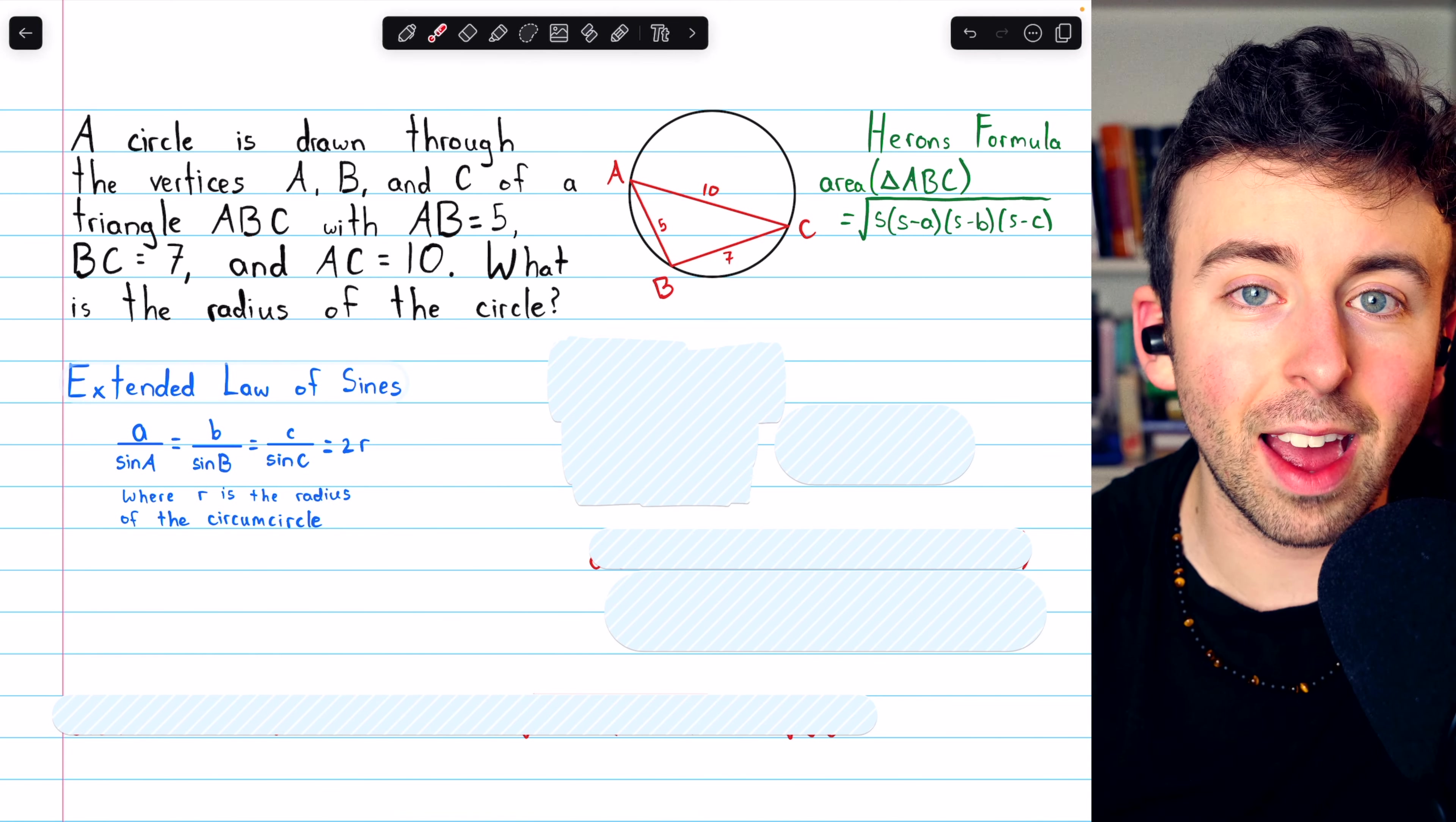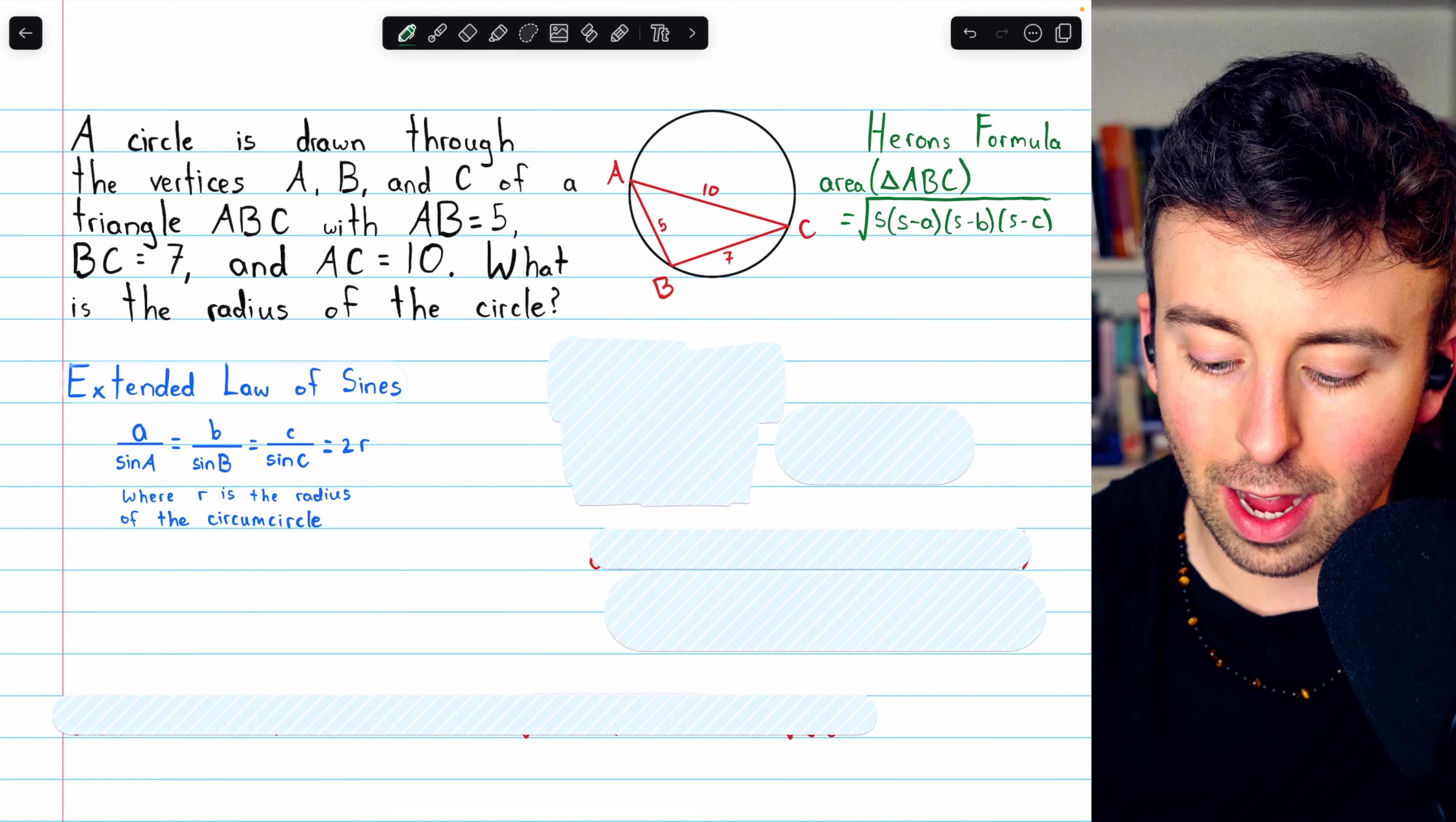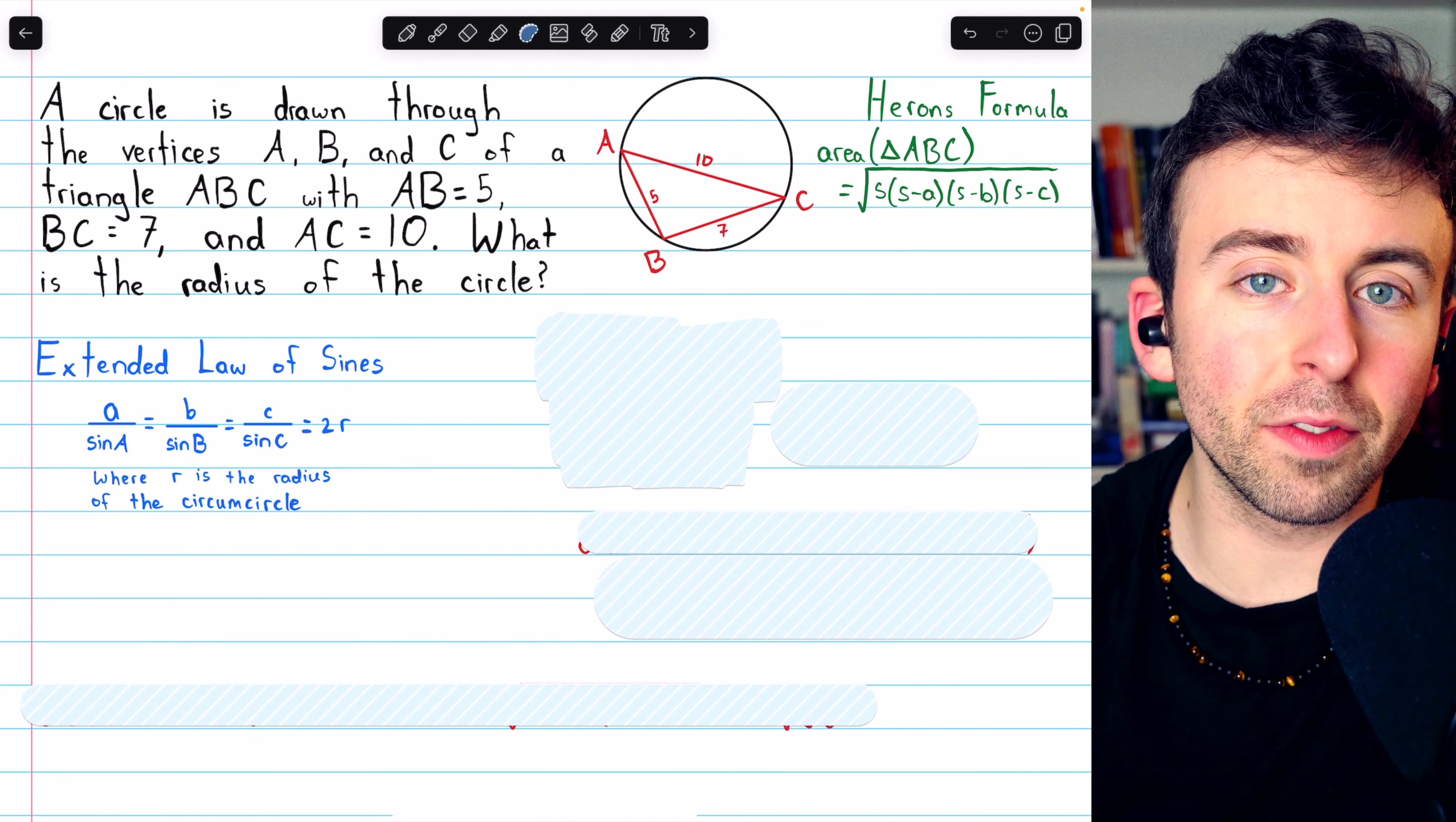That's the typical law of sines. The extended law of sines also tells us this is equal to 2 times the radius of the circle. With those hints, you can give the problem a try yourself.